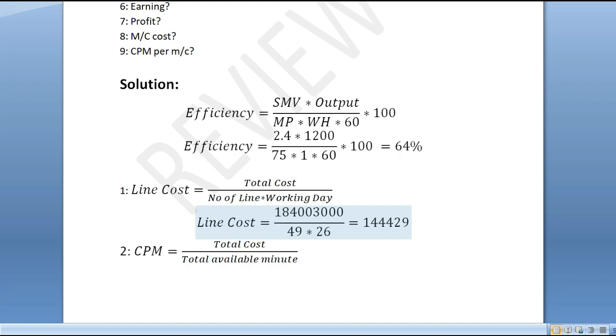Line cost equals total cost divided by number of lines (49) times 26 working days. This gives the per day cost per line.